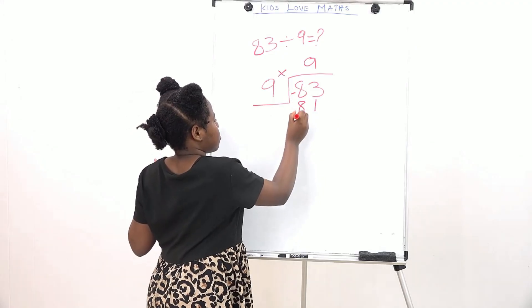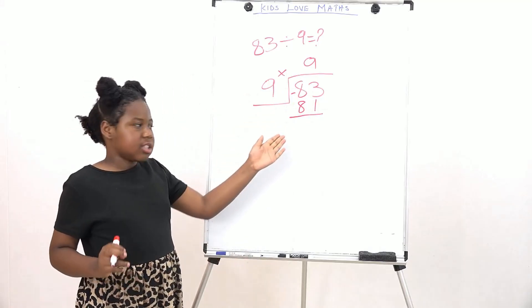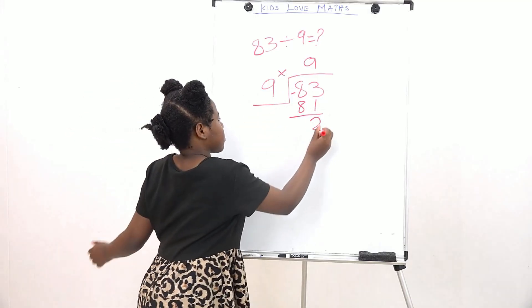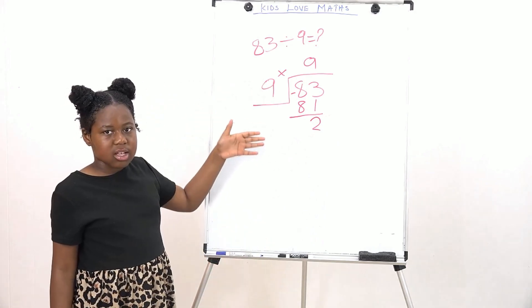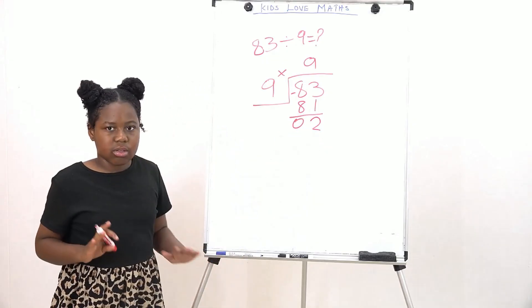Don't forget to subtract. Now 3 minus 1 is 2, and 8 minus 8 is 0. So that will leave us with the remainder of 2.